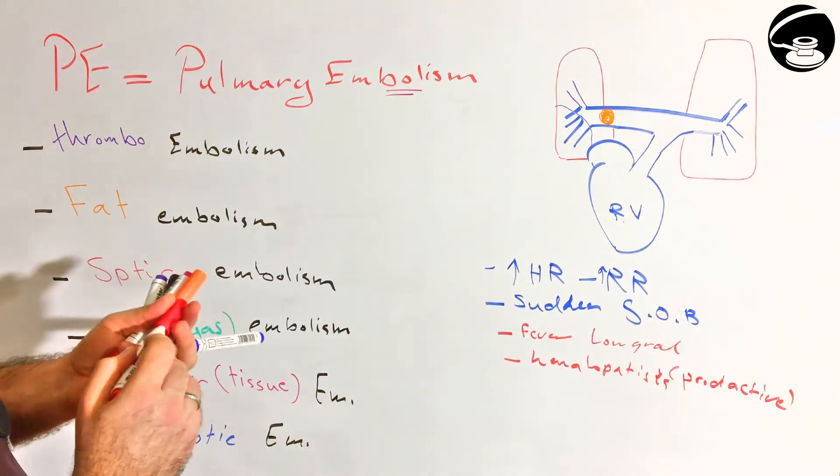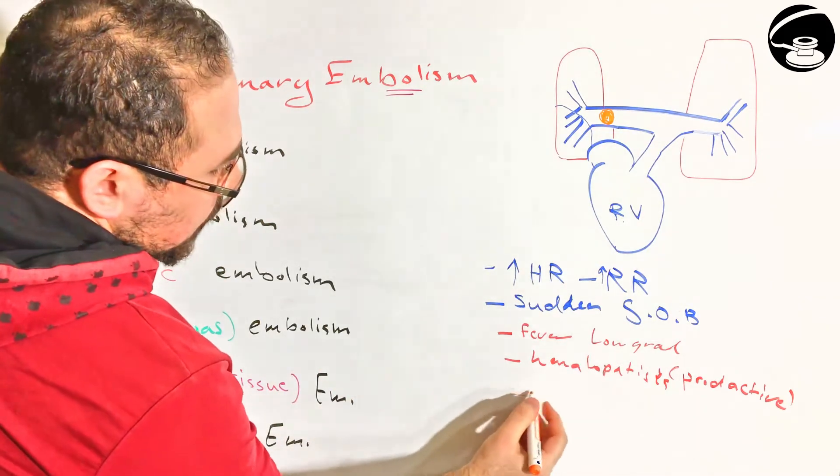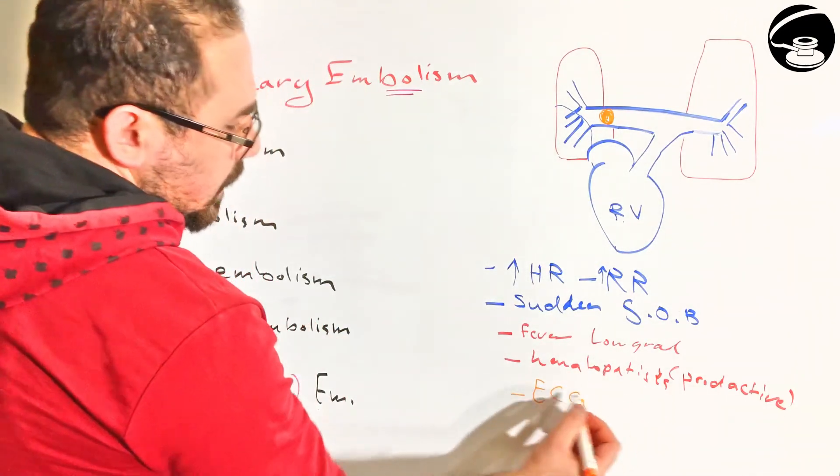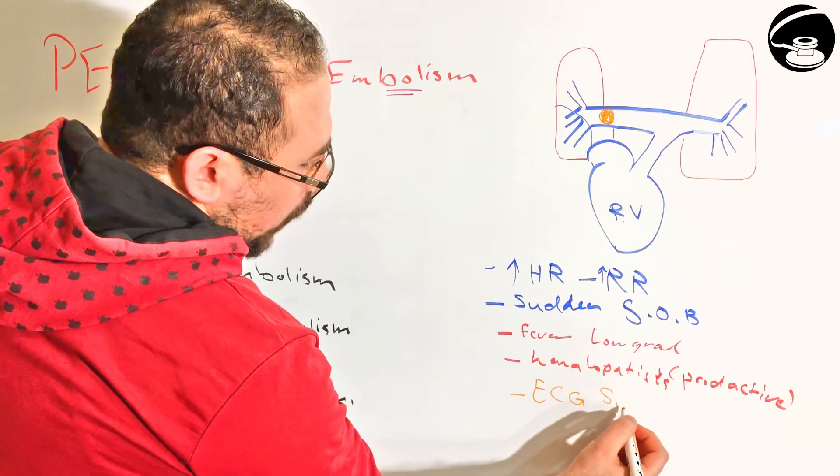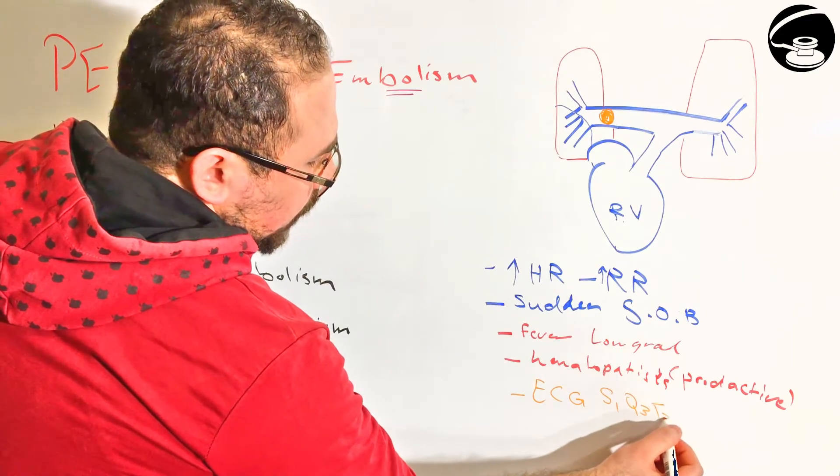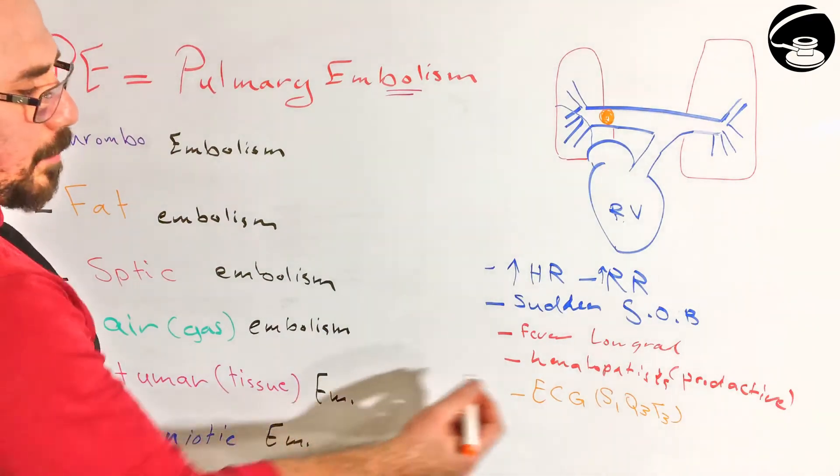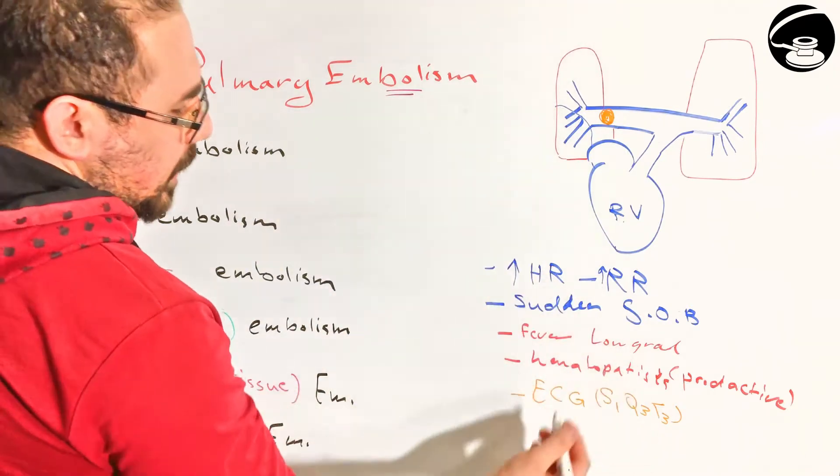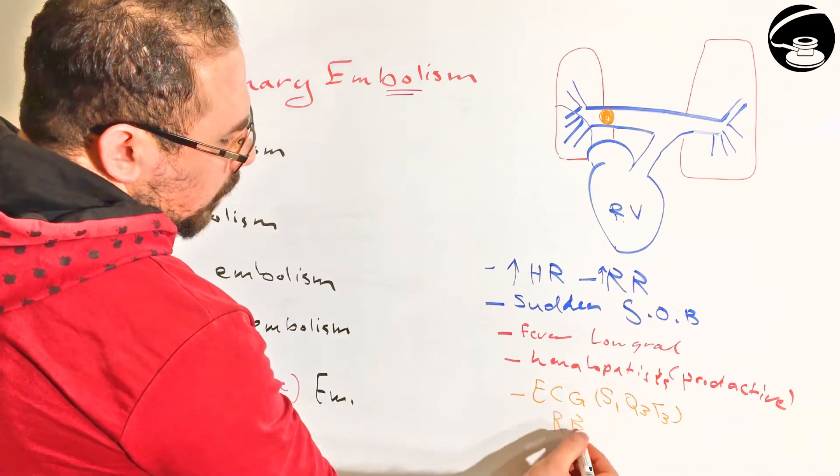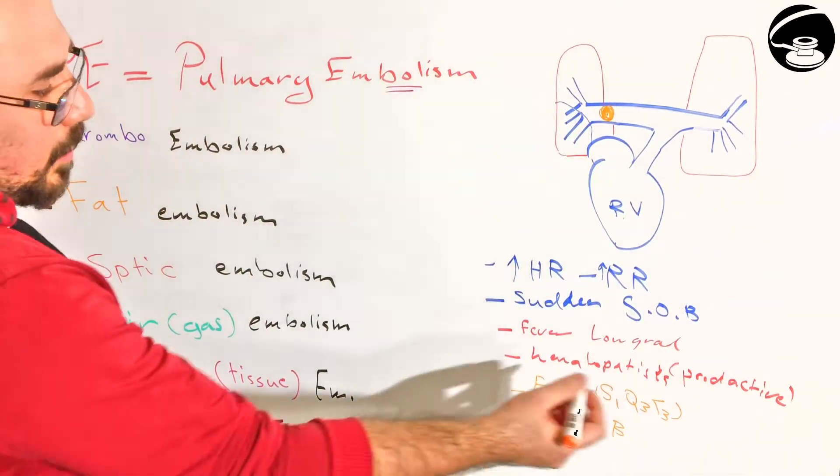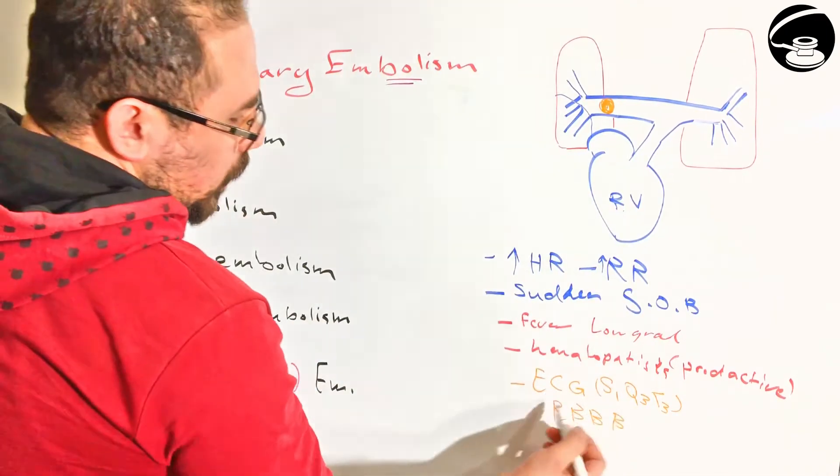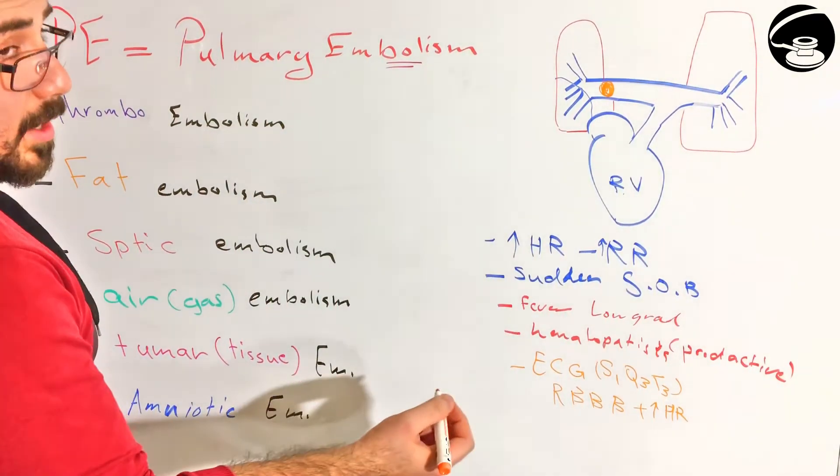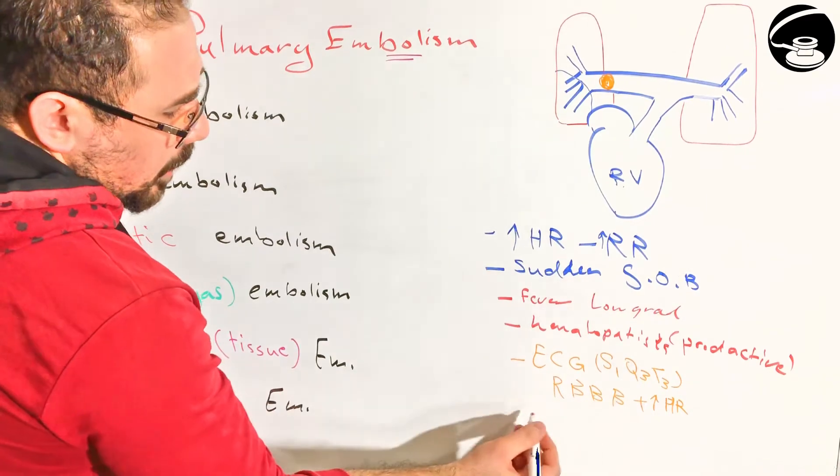Using ECG, we can see something. ECG is not very helpful, but they will use it in the questions a lot. ECG can show you what we call the S1, Q3, T3 sign, which is basically a deformity that happens with pulmonary embolism in the ECG. But that's not always the case. I mean 99% you won't see it. You may see what we call the right bundle branch block. Also, you may see an increase in heart rate in ECG, tachycardia, sinus tachycardia.